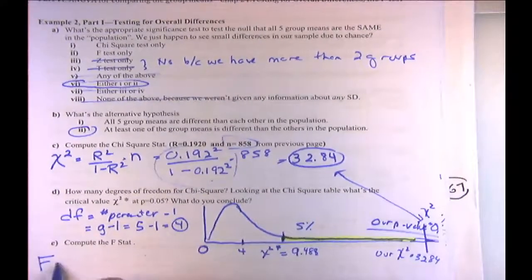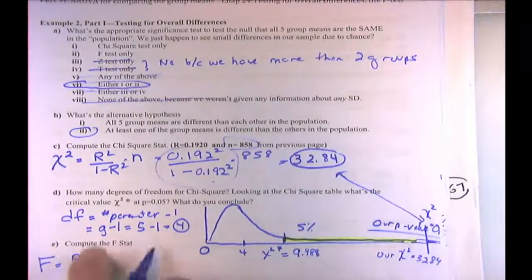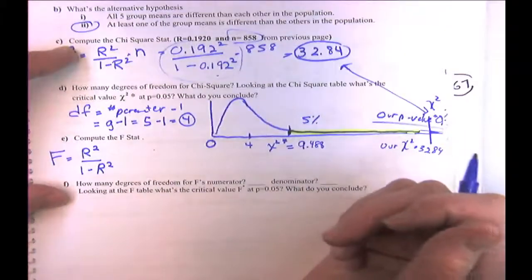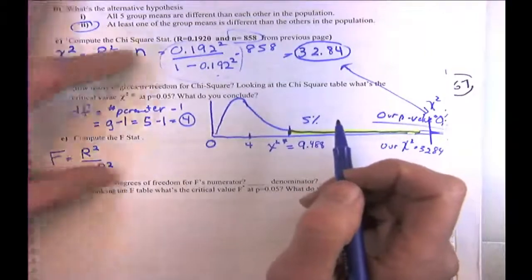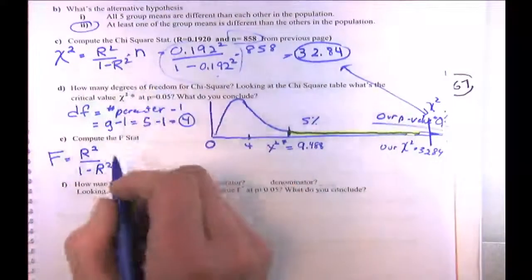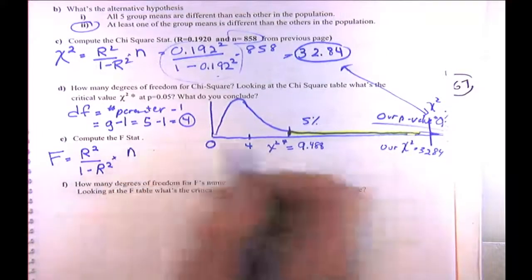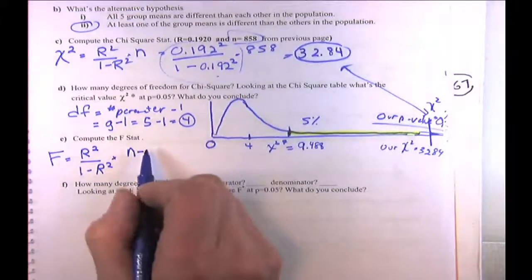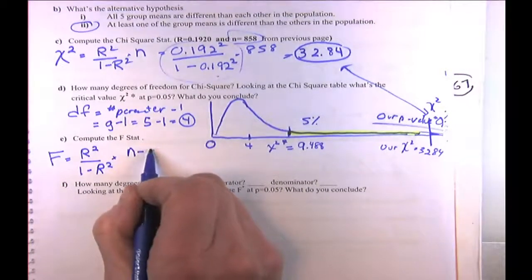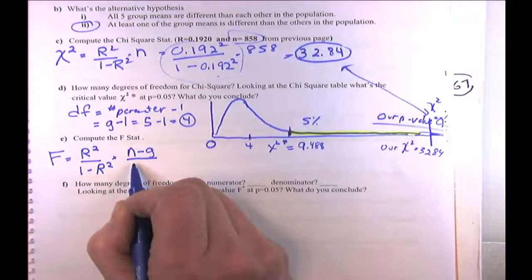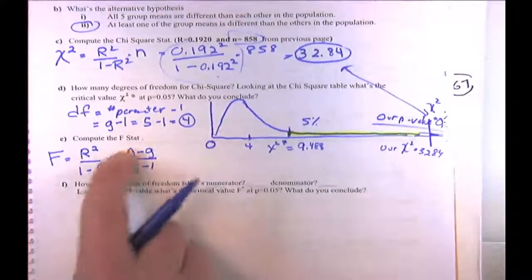Now let's compare it to the F-test. The F has the same core: strength of the model over strength of the errors — that's r-squared over 1 minus r-squared. But instead of multiplying by n, we multiply by n minus the number of groups, divided by g minus 1.